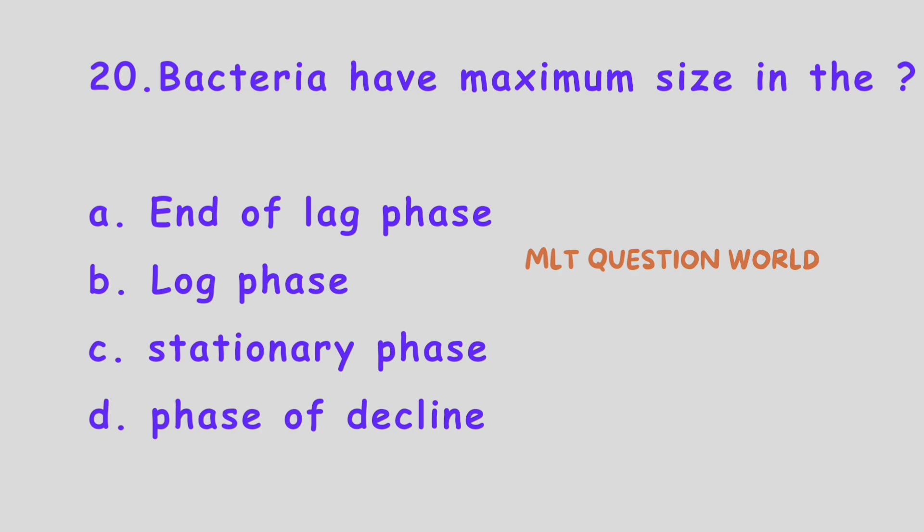Next question. Bacteria have maximum size in: Option A, End of lag phase; Option B, Log phase; Option C, Stationary phase; Option D, Phase of decline. Bacteria have maximum size in which of the following stages of growth? The right answer is End of lag phase. Bacteria have maximum size at the end of lag phase.